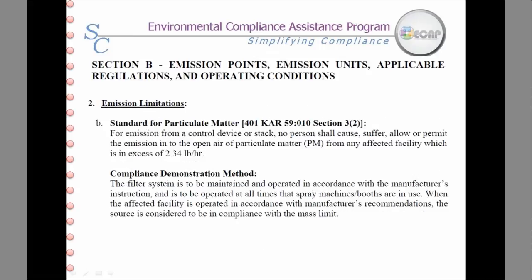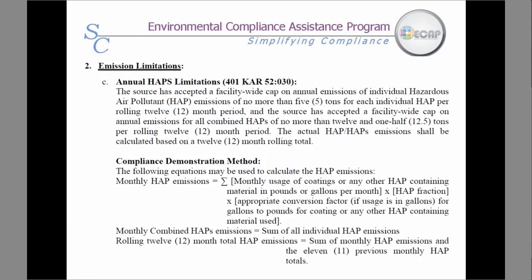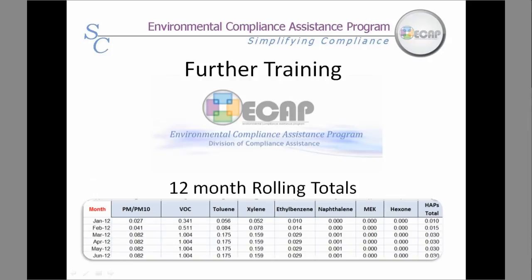Another common emission limit is for particulate matter. In this case, the filter system is to be in place in order to be in compliance with the emission limit. Hazardous air pollutant and VOC limitations usually require a 12-month rolling total to be kept, and your permit explains how to calculate the rolling total — usually in Section D. If you are unsure how to perform the required 12-month rolling total emission calculations, please contact the Division of Compliance Assistance for assistance or training. DCA can assist small businesses with creating easy, user-friendly rolling total spreadsheets.